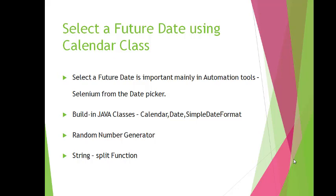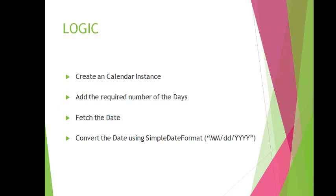Once the date is generated in a format like MM/DD/YYYY, if we want to fetch only the year, month, or day out of that format, we have to use the split function available in the String class. To achieve this, we follow these steps: create a Calendar instance, add the required number of days, fix the date, and convert it into SimpleDateFormat in the required format MM/DD/YY. Now let's get into the demo to understand this logic.